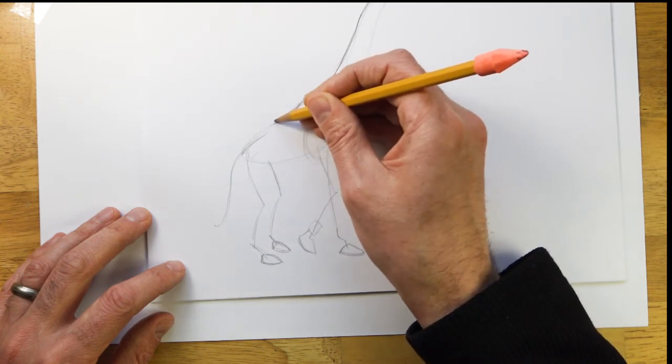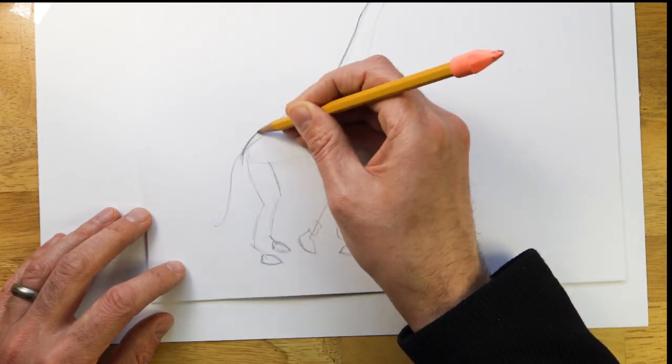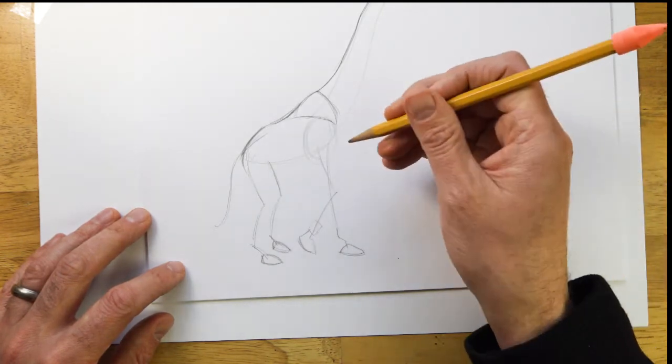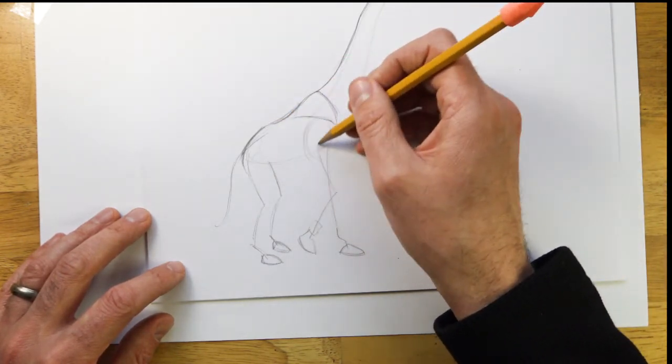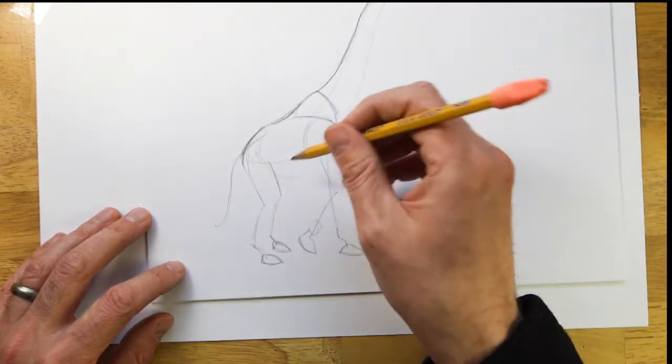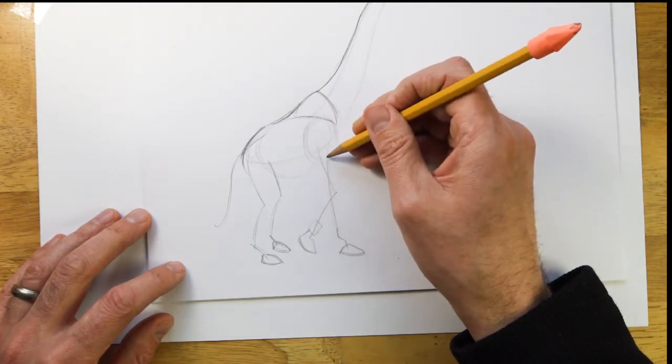And then curve to the back and down. This area we're going to, well you know what, let's wait on that. Let's draw this front leg just as we did before.